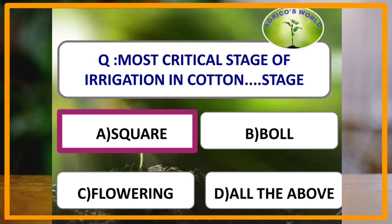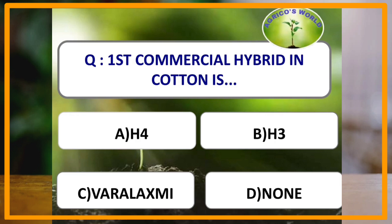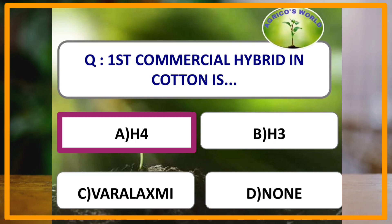The first commercial hybrid in cotton is which of the following? H4 is the first commercial hybrid in cotton. It was developed by the scientist C.T. Patel in the year 1970. It is the first intraspecific hybrid of cotton.